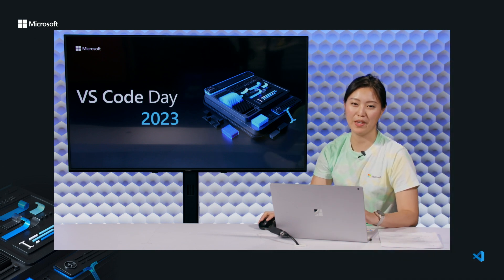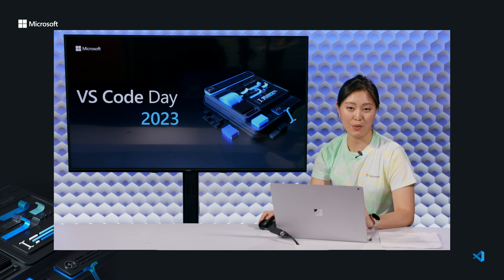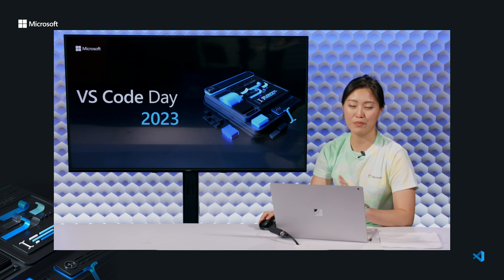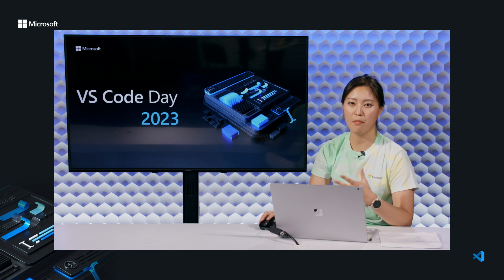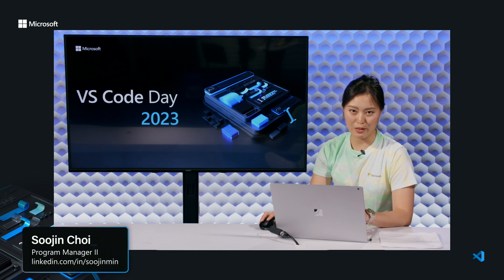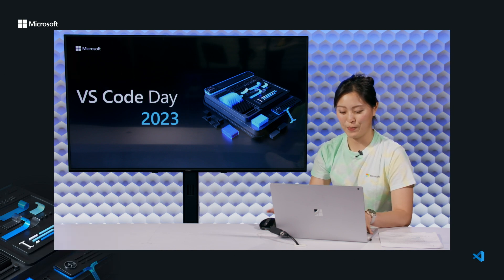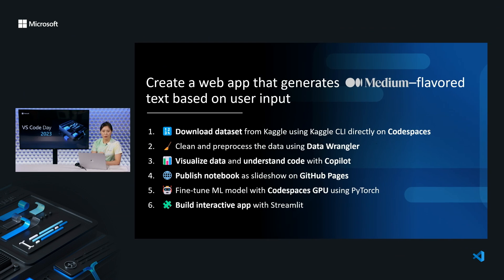My name is Sujen. I am a PM on the VS Code team and today I'll be talking about data science for everyone and everywhere. This is pretty appropriate for somebody like me — I'm a PM, I am not a trained data scientist, but I do on a day-to-day basis help our team make data-driven and data-informed decisions. Hopefully this provides some practical tips and tricks for anybody at any level to do data science in VS Code.